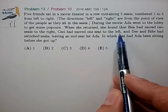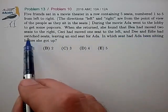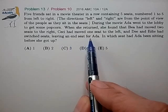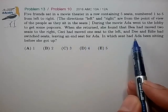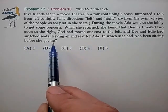she found that B had moved two seats to the right, C had moved one seat to the left, and D and Eddie had switched seats, leaving an end seat for Ada. In which seat had Ada been sitting before she got up?